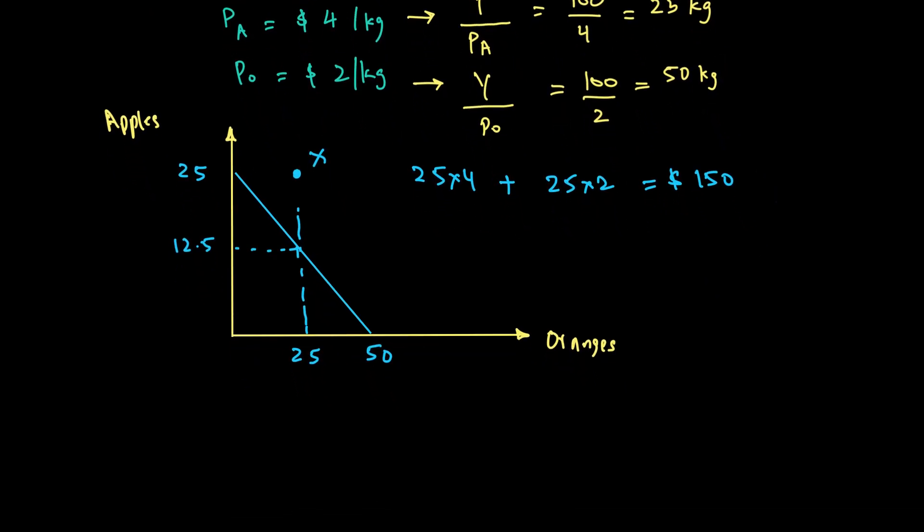The next discussion is to understand the slope of the budget line because that will be very useful for later discussion. The formula for the slope is always change in Y over change in X. If I move from 25 apples to zero apples but then consume 50 oranges, my slope becomes minus 25 over plus 50, or minus one-half.